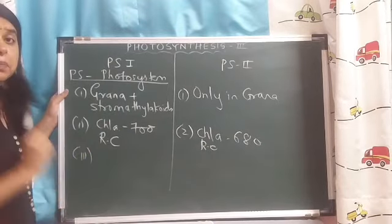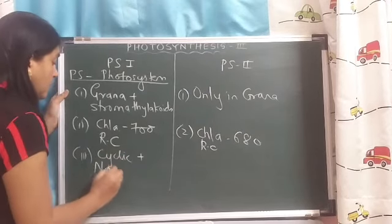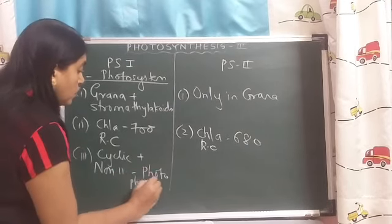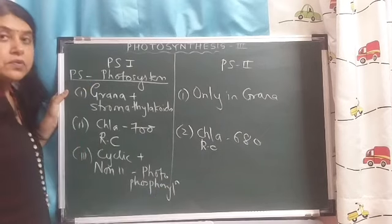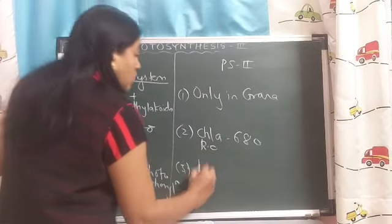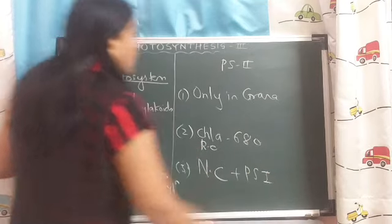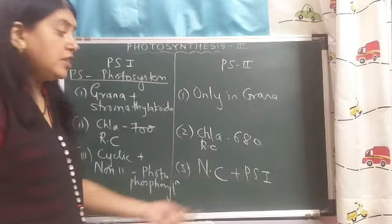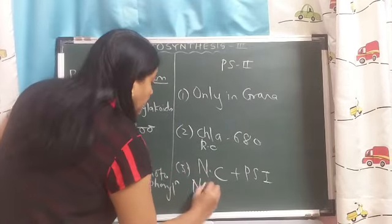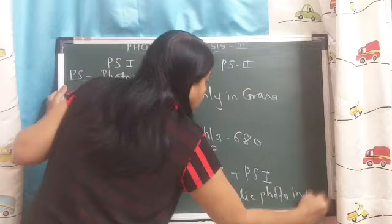PS1 is able to carry out cyclic as well as non-cyclic photophosphorylation. PS2 is able to carry out non-cyclic photophosphorylation in association with PS1. It is not able to carry out cyclic photophosphorylation independently.